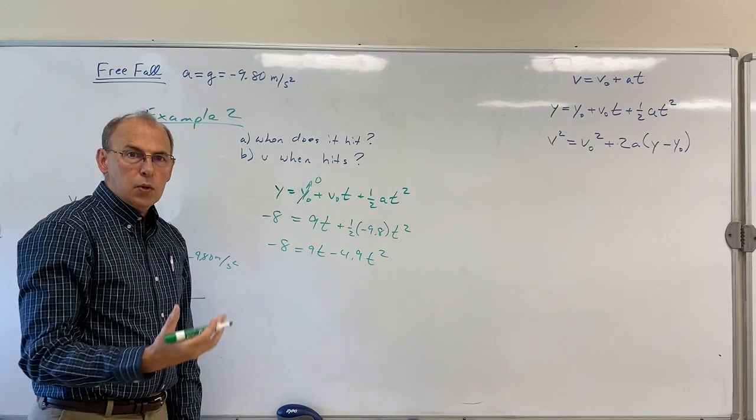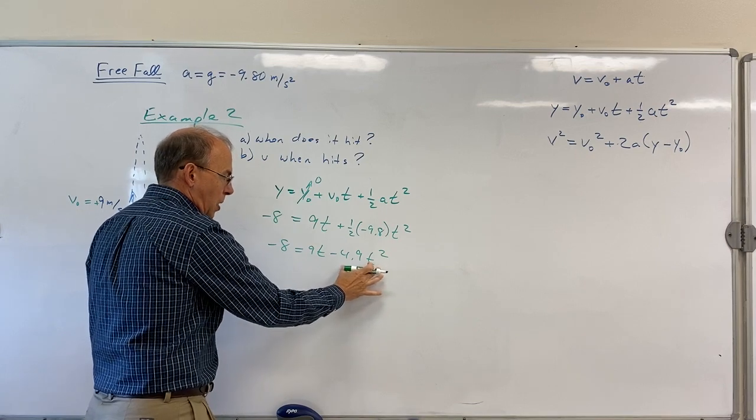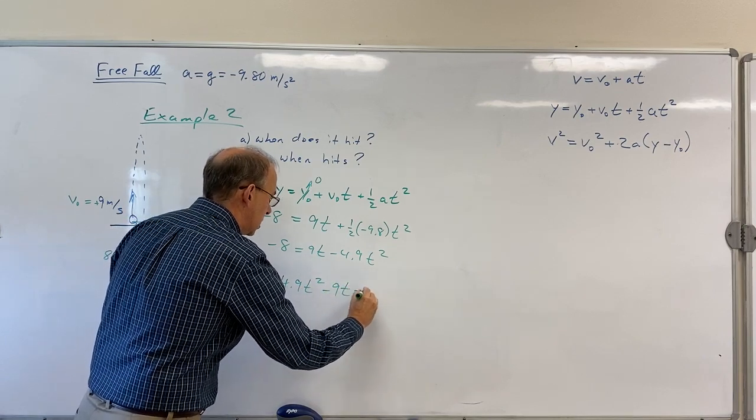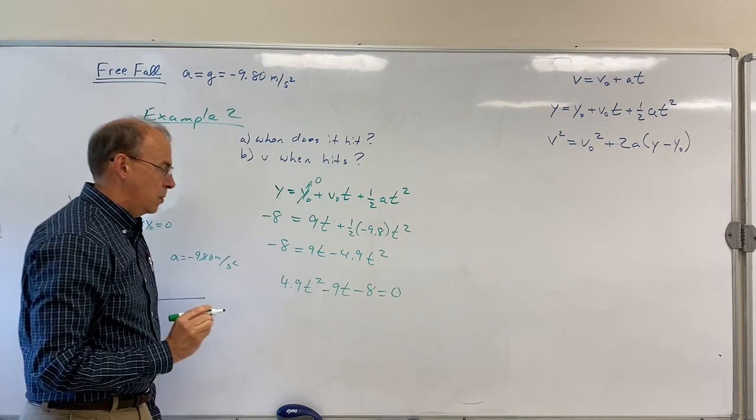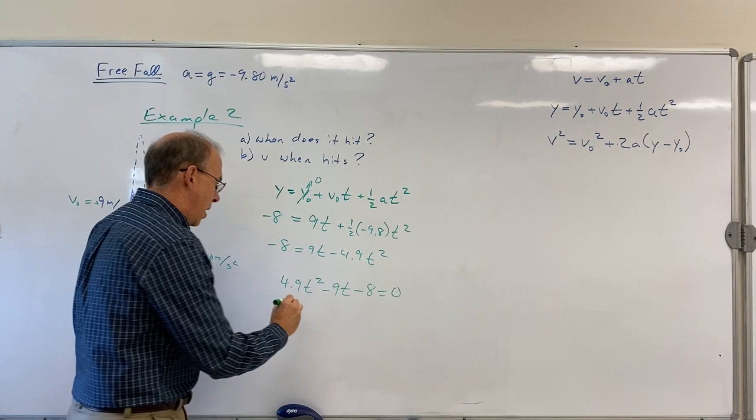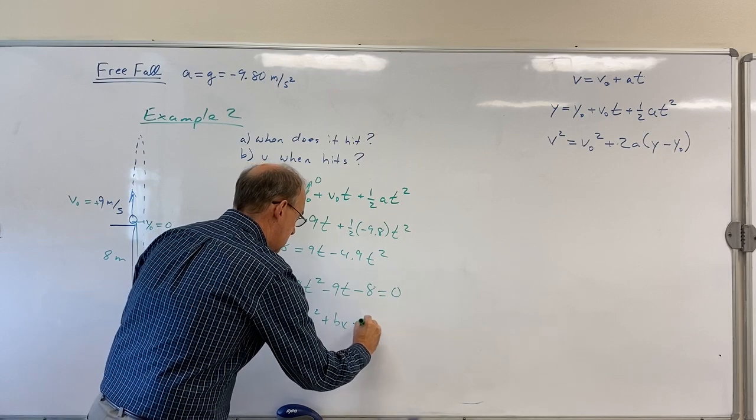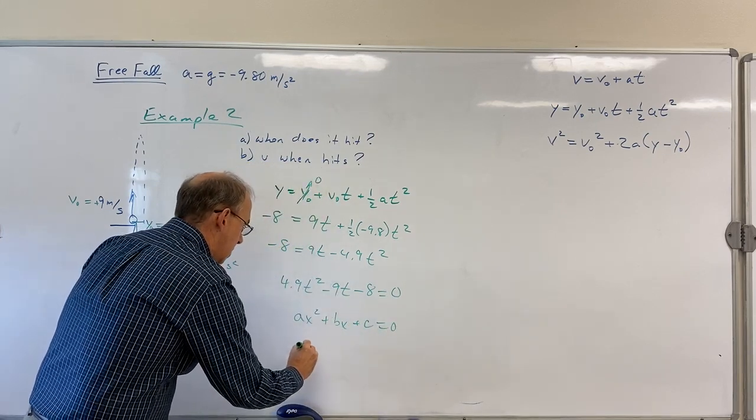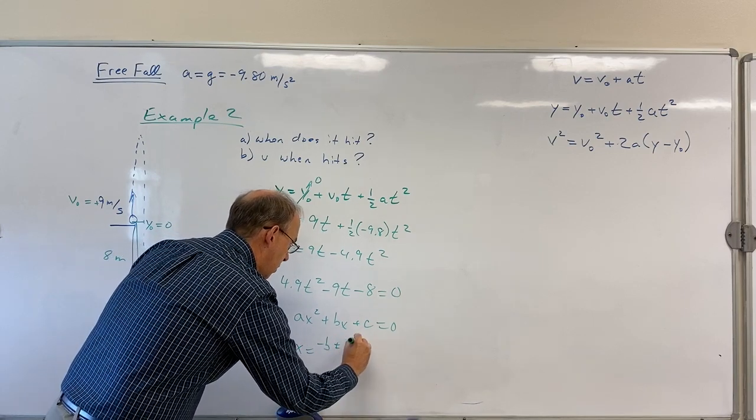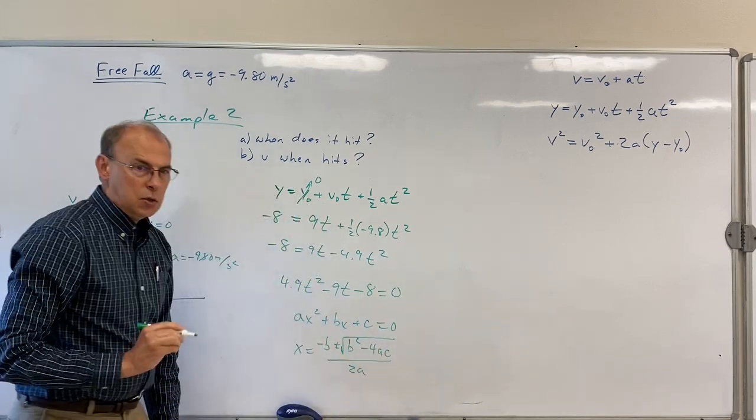The way I write quadratic equations, I like to write the leading square term as positive. So I would write this as 4.9t² - 9t - 8 = 0. And then use the quadratic formula. You might remember that if you have an equation that says ax² + bx + c = 0, then the quadratic formula says x = [-b ± √(b² - 4ac)]/2a. That's the quadratic formula.